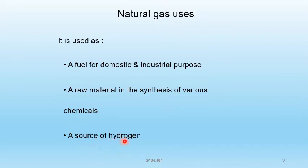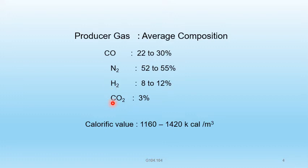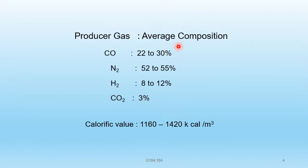Next, producer gas. It is a mixture of carbon monoxide, nitrogen, hydrogen, and a little amount of carbon dioxide. The average composition is: carbon monoxide 22 to 30%, nitrogen 52 to 55%, hydrogen 8 to 12%, and carbon dioxide 3%.